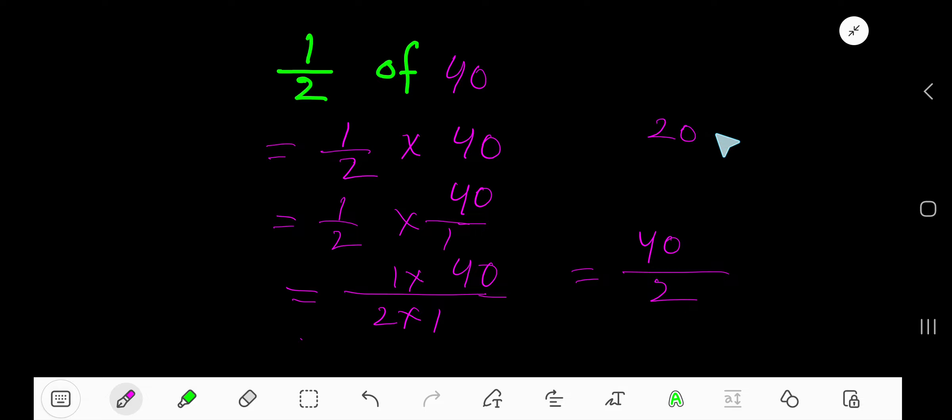Now you need to reduce this fraction. How to do that? Just divide numerator and denominator by the common factor or highest common factor.